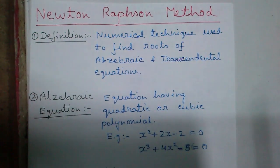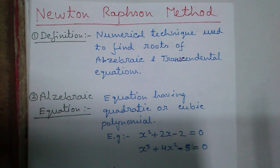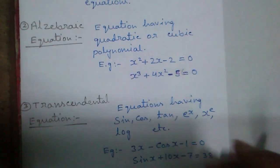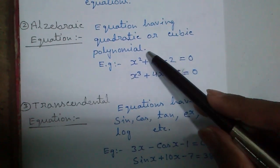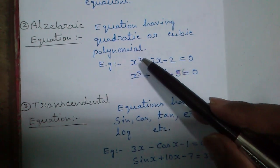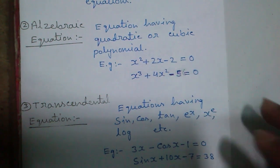Newton-Raphson method is a numerical technique used to find roots of algebraic and transcendental equations. Algebraic equations having quadratic or cubic polynomials are called algebraic equations, for example x square plus 2x minus 2 equals 0.